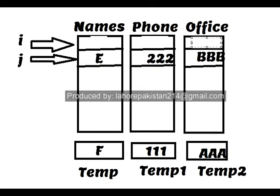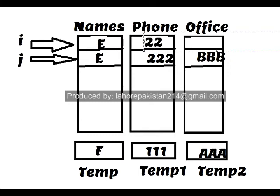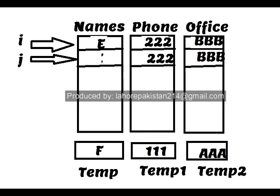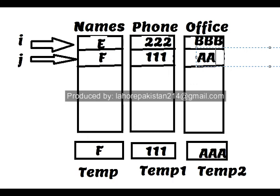Then the values at the second location — 'e' — will be shifted upwards into the first location. The phone entry will also be shifted upwards into temp1's position, and the office entry will be shifted upwards as well. Then the three temp values at position j will be filled with the original values of f, temp1, and temp2. This is how all the members will be arranged in ascending alphabetical order.